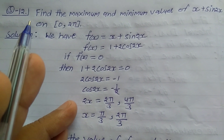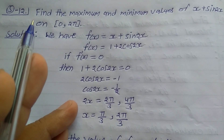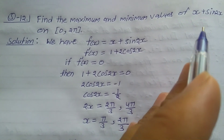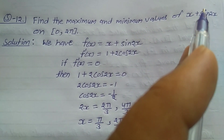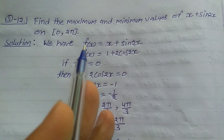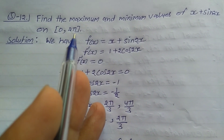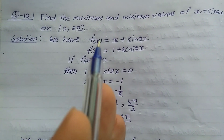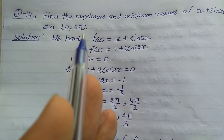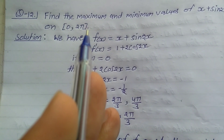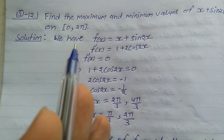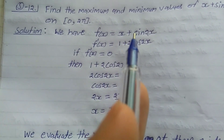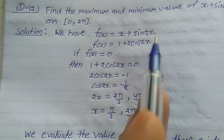Explanation number 12, Exercise 6.5, Class 12. Find the maximum and minimum value of f(x) = x + sin(2x) on the closed interval [0, 2π]. We need to find the maximum and minimum values of this function on this interval. Solution: we have f(x) = x + sin(2x).